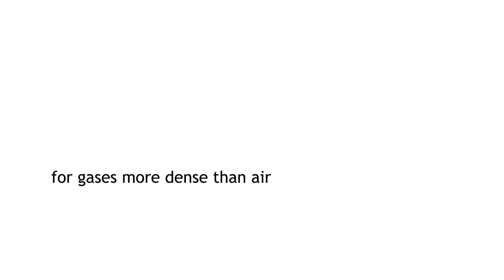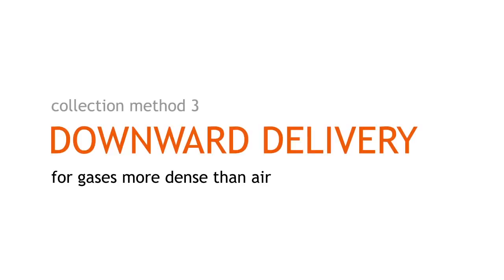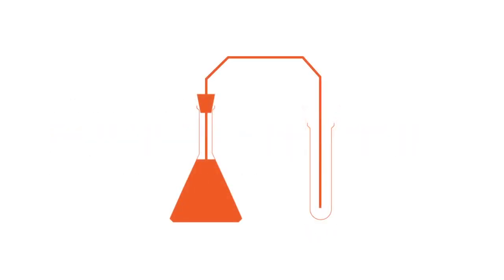For gases more dense than air, they are collected via downward delivery. The collection vessel is placed upright so that the denser gas is able to displace the air inside it as it sinks.